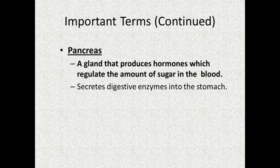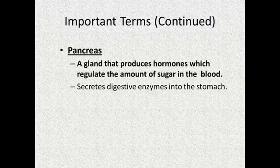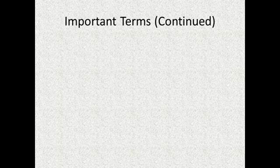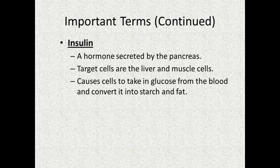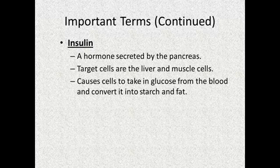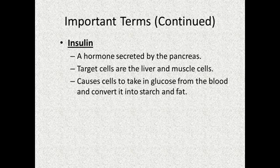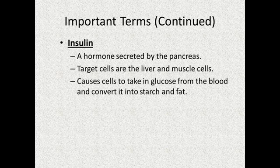The pancreas already secretes digestive enzymes directly into the stomach, but it also makes several hormones that it secretes into the blood. One of those is insulin — a hormone secreted by the pancreas that targets cells in the liver and in muscles. Insulin causes cells to take glucose in from the blood and convert it into starch. Glucose is a monomer that makes up polymers such as starch, and it can also be broken down further and converted into fat, into lipids.